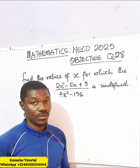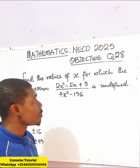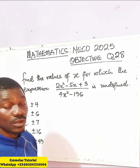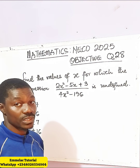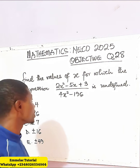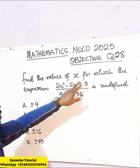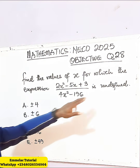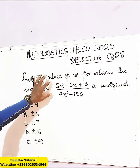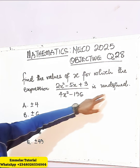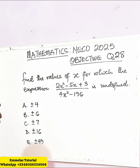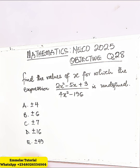Welcome to Millacorn Night tutorial. Before us is question number 28 of the negative 25 objective question, and it reads: find the values of x for which the expression — here's the expression here — is undefined, and we are given the options.